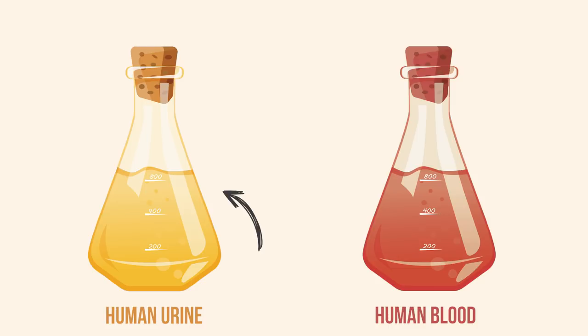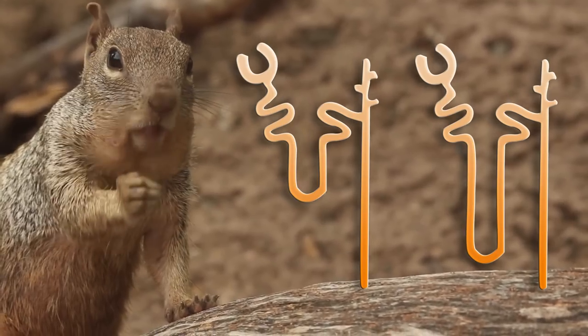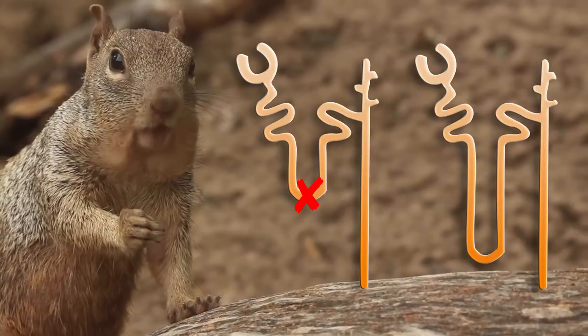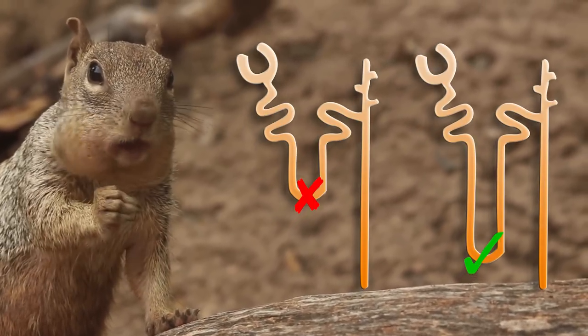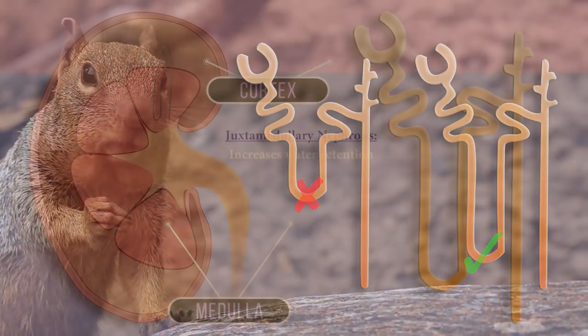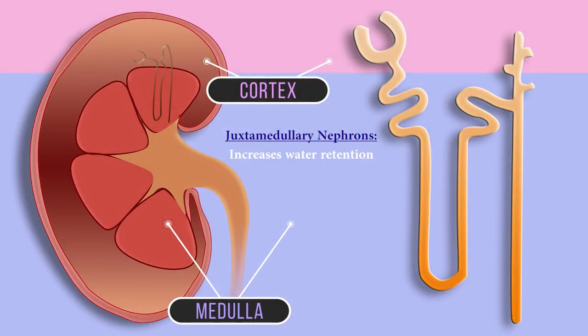The urine of a human can be four to five times as concentrated as the blood. The drier the natural habitat of an animal, the longer its loop of Henle. This is to conserve as much water as possible.